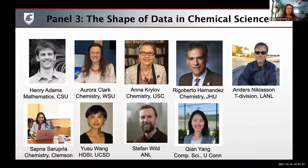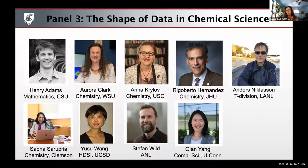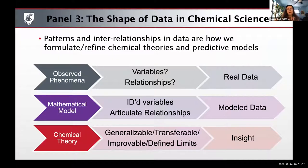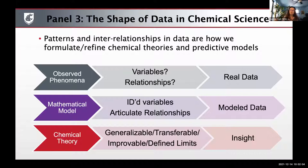The panel that I was in charge of was called The Shape of Data in Chemical Science, and we had a really lovely panel that spanned mathematicians to computational chemists, both in quantum chemistry as well as statistical mechanics and computer scientists. We were really trying to tackle the question of how the patterns and interrelationships in data produced from these methods are used to refine and formulate chemical theories and develop new predictive models.